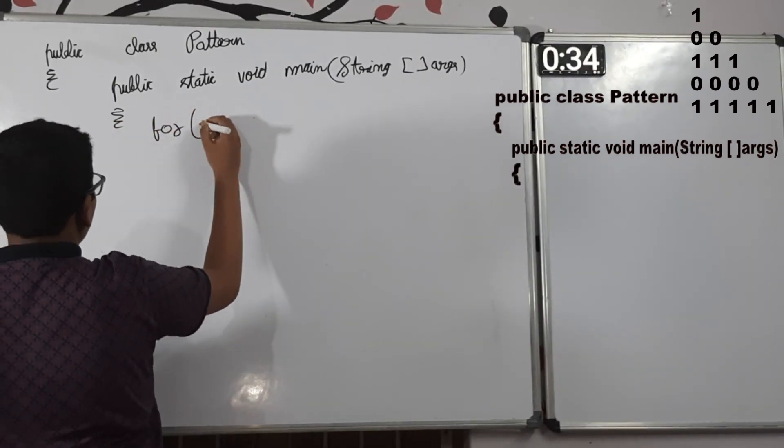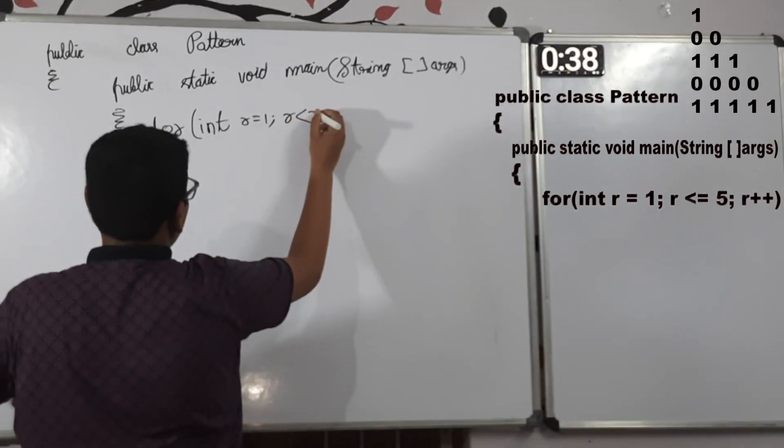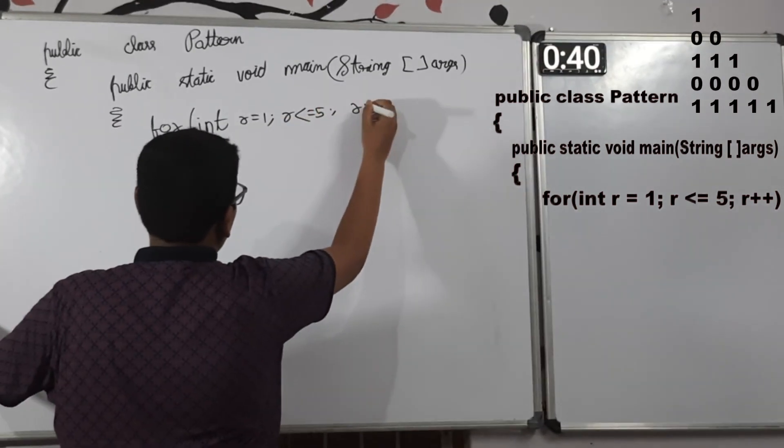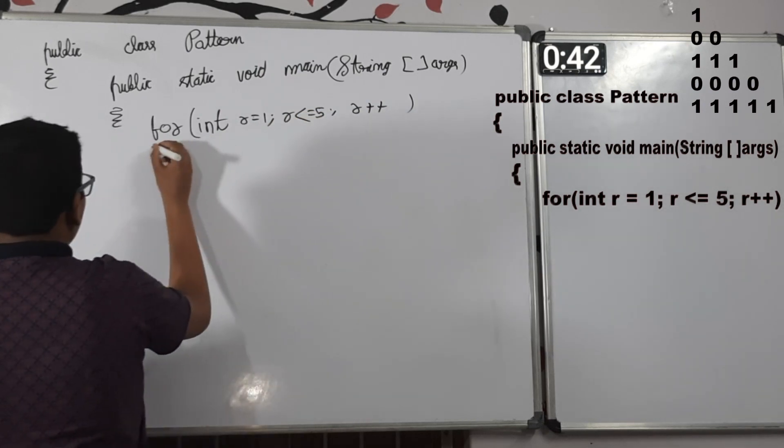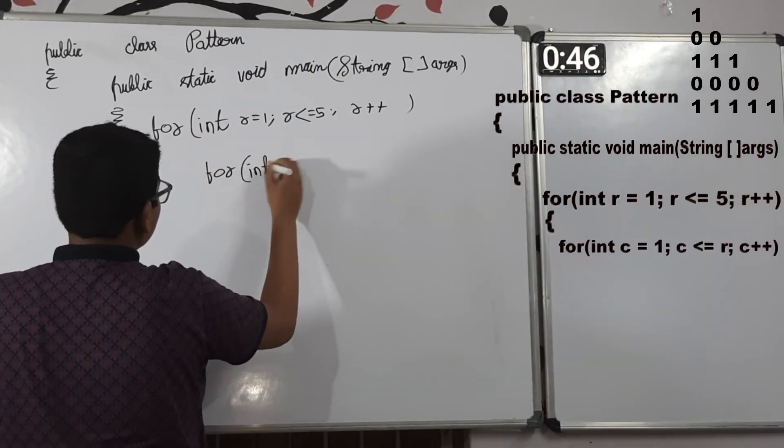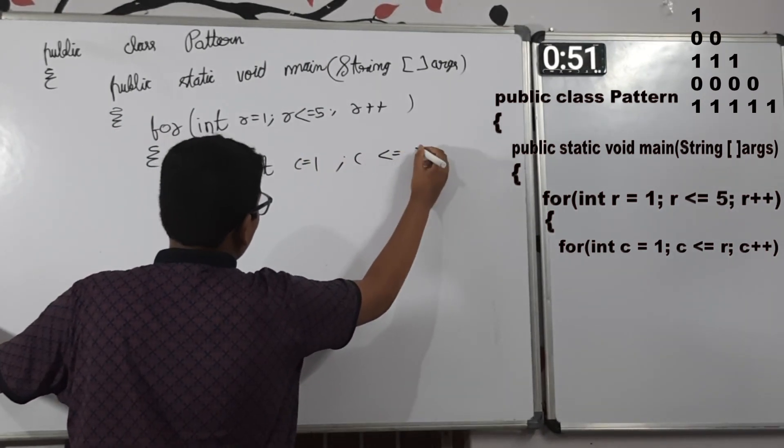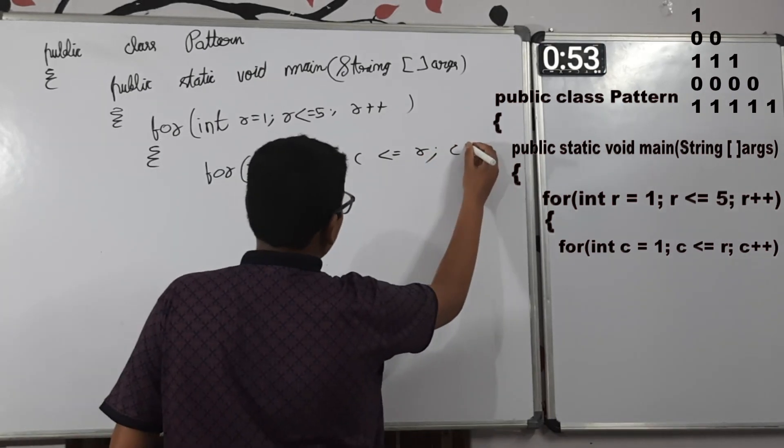For int r is equal to 1, r less than is equal to 5, r plus plus. Opening scope for loop. For int c is equal to 1, c less than is equal to r, c plus plus.